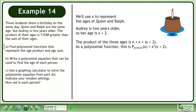The product of the three ages is x times x times x plus 2. As a polynomial function, this is P_product(x) = x²(x + 2).